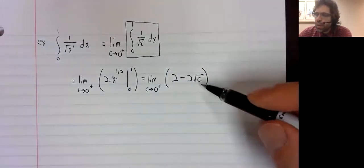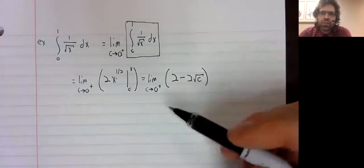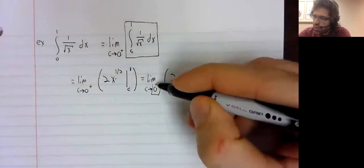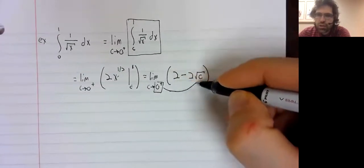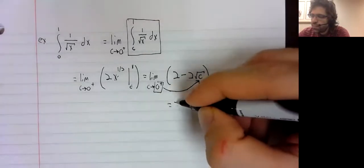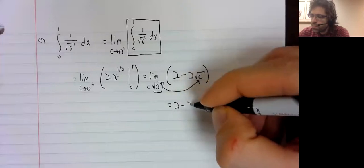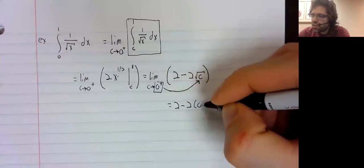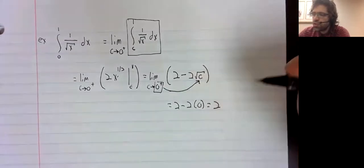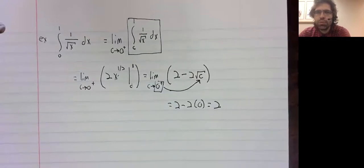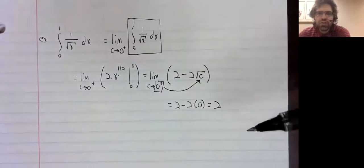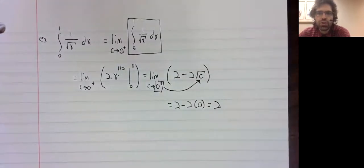And now the square root is continuous, so when you take this limit, you can just plug the limit in. And we get a finite number, two. So this integral exists and it equals two.